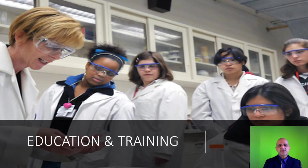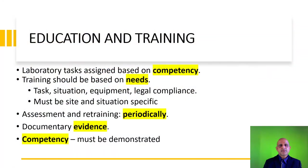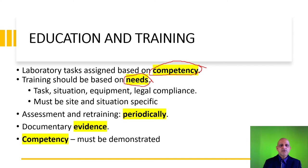Another aspect of administrative controls is education and training. Laboratory tasks must be assigned based on competency. For instance, if someone has a demonstrated ability to use a microscope, they should be assigned that task rather than nucleic acid extraction. As a laboratory manager or biorisk manager, you must assess competency and assign tasks accordingly. Training should also be based on needs — for instance, if you install new equipment, all personnel must be trained on the SOP for that equipment.